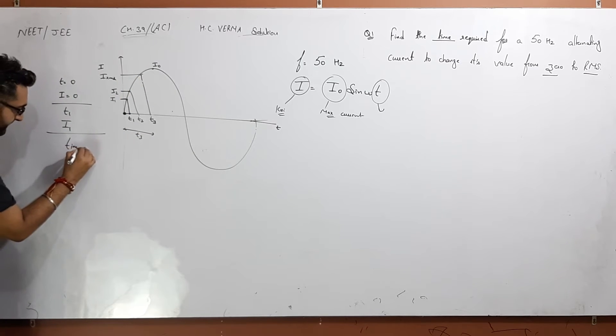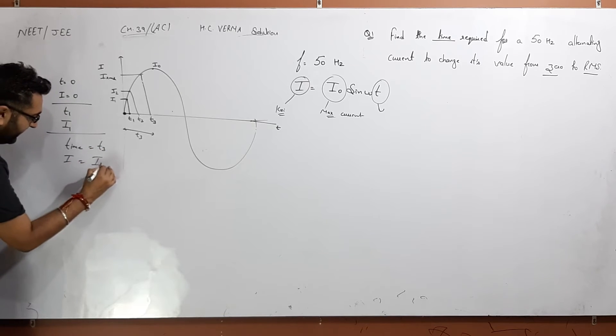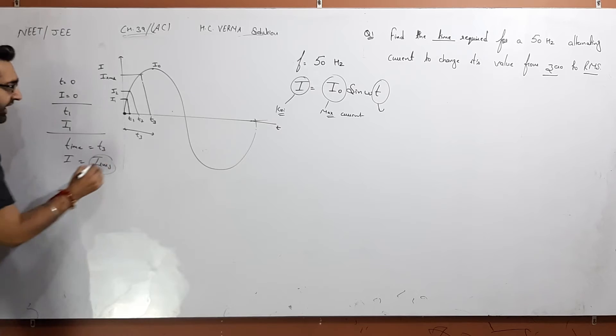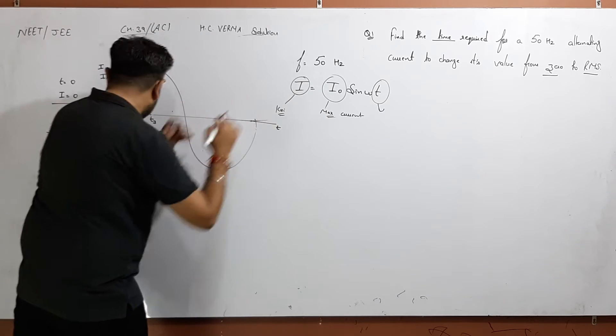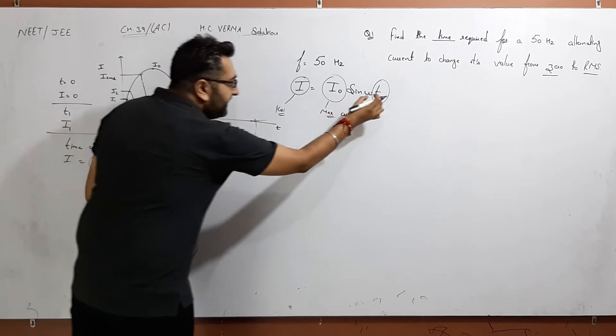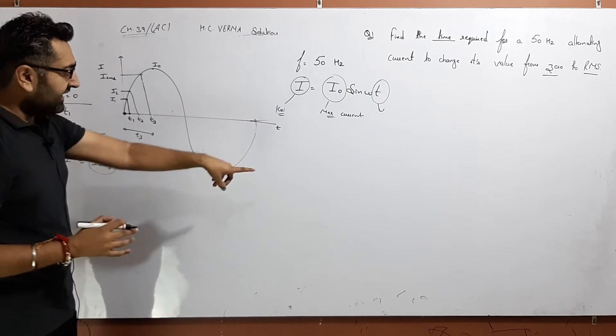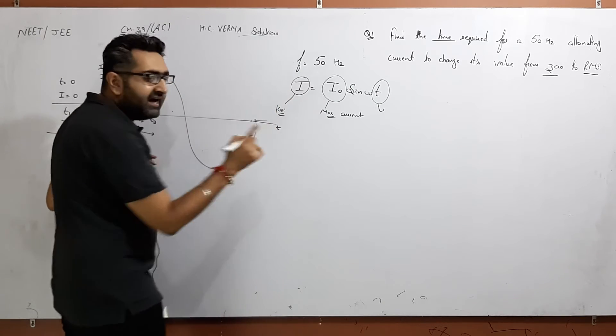At time T3, the current is IRMS. So IRMS is a current at a particular time interval. What can we do? The time interval is IRMS.